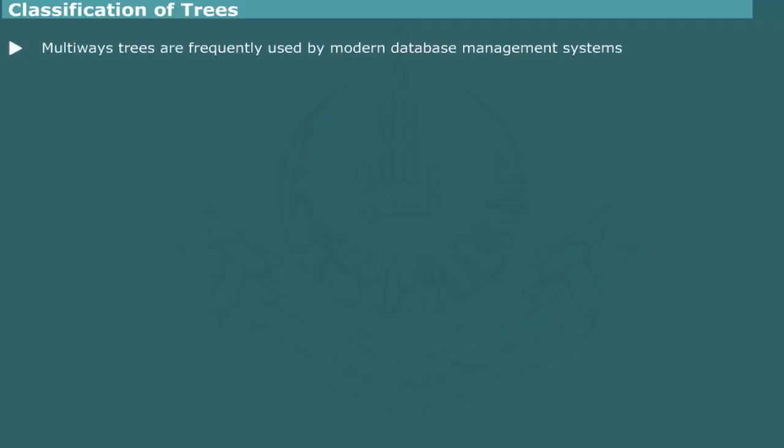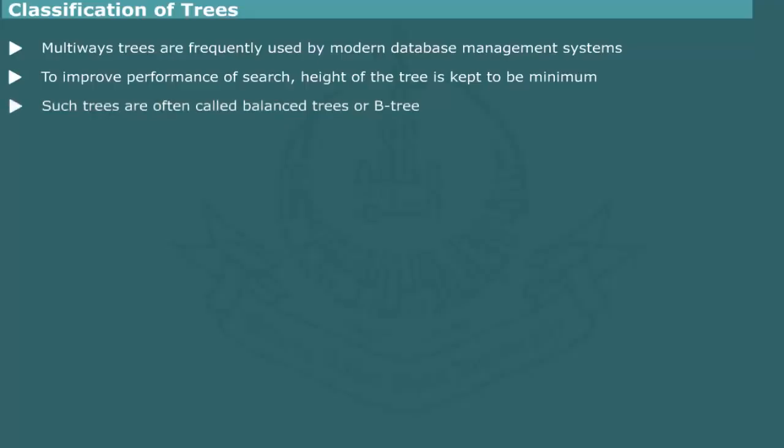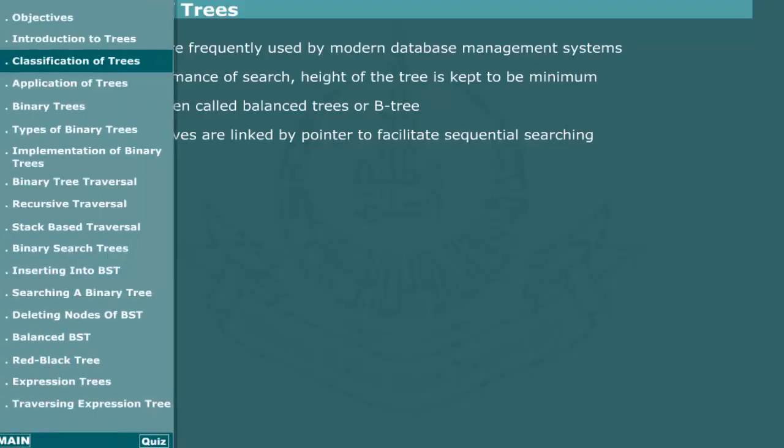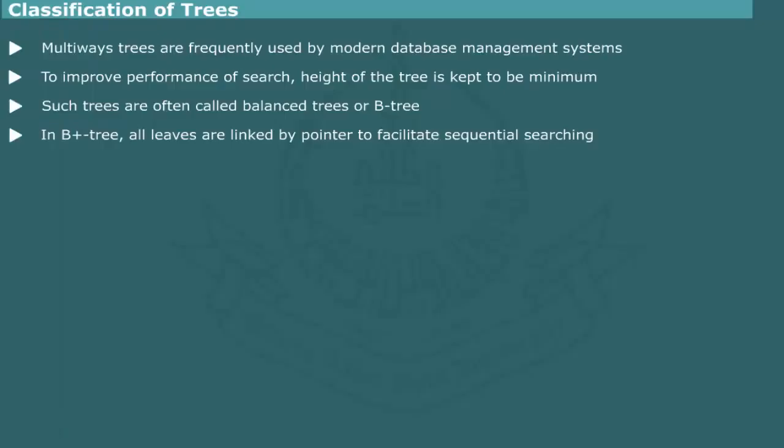Multiway trees are frequently used in modern database management systems to facilitate rapid searching of indexed records. In order to improve the performance of search operations, the height of tree is kept to be minimum by balancing the levels of sub-trees. The resulting trees are often called as balanced trees. The term B-tree is often used to describe such trees. B-plus-tree is a variant of B-tree, in which all the leaves are linked by pointers to facilitate sequential searching in addition to normal random searching. Indeed, B and B-plus trees are cornerstones of all modern data file systems and database management systems.